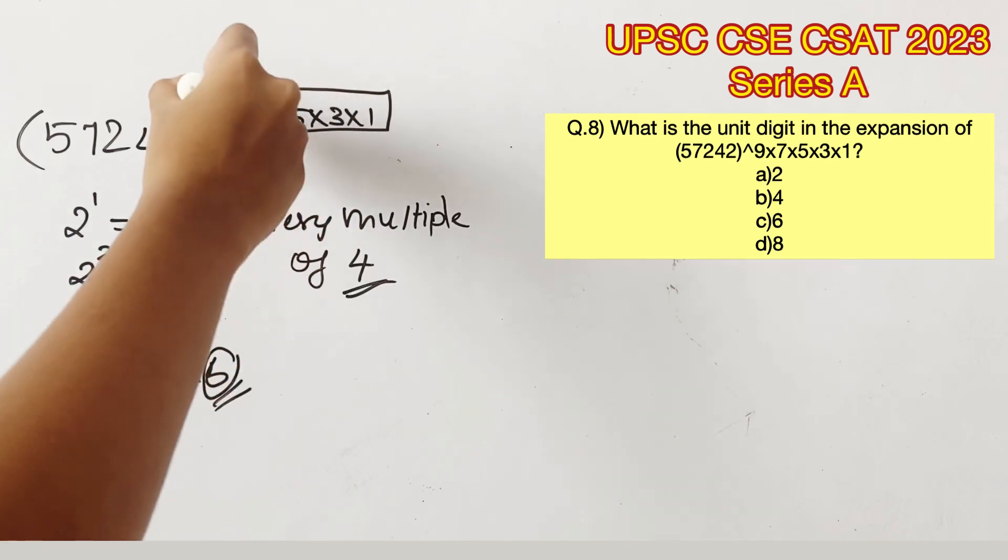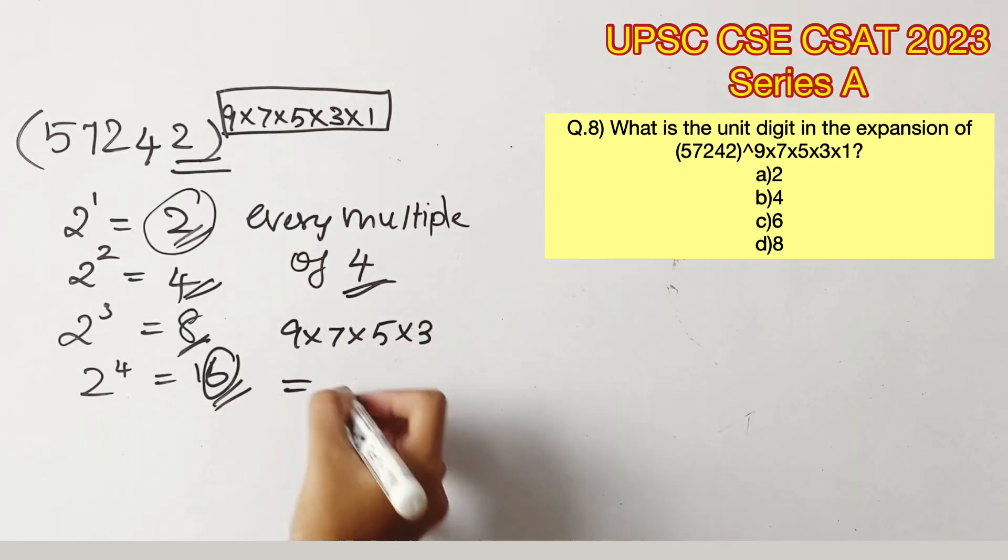Now we can move on to solving the numerator 9×7×5×3×1 which gives us 945.